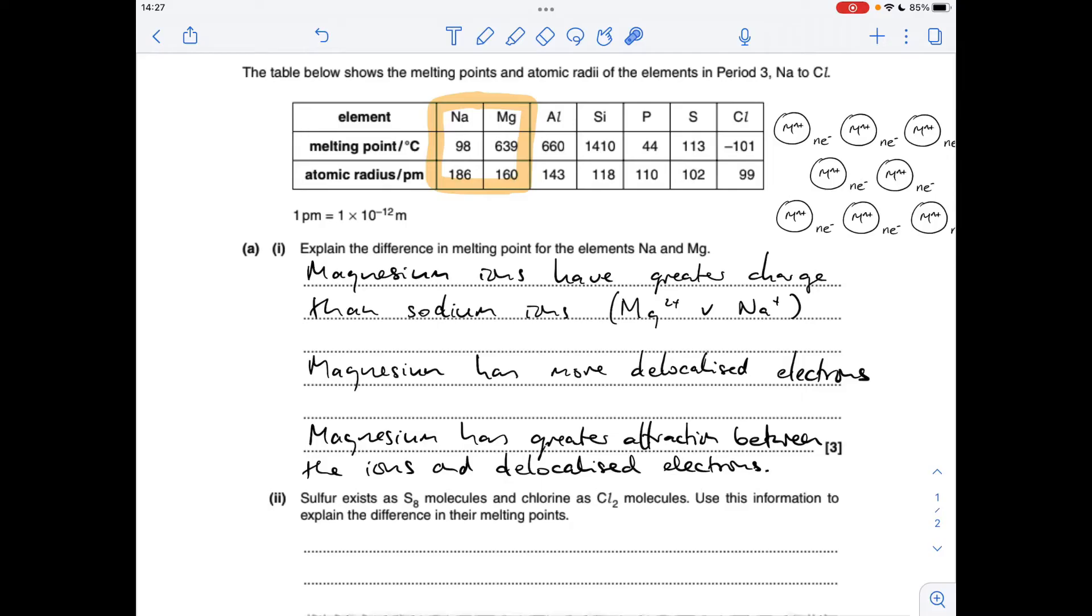Magnesium would have more delocalized electrons, so for every magnesium ion there are two delocalized electrons in this sea of delocalized electrons. Therefore, the attraction between the magnesium ions and the delocalized electrons is greater than between sodium ions and its delocalized electrons.